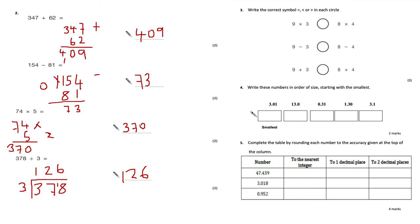Question 3: write the correct symbol — equals, less than, or greater than — in each circle. 9×3 = 27 and 8×4 = 32, so 32 is bigger than 27, meaning the symbol points left. 9−3 = 6 and 8−4 = 4, so 6 is greater than 4. 9+3 = 12 and 8+4 = 12, so this one gets an equals sign.